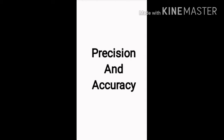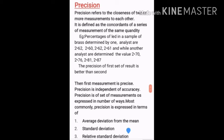The next topic is precision and accuracy. We need these concepts in chemical analysis. Precision refers to the closeness of two or more measurements to each other. It is defined as the concordance of a series of measurements of the same quantity. We use this in chemical analysis, titrations, and measurements.